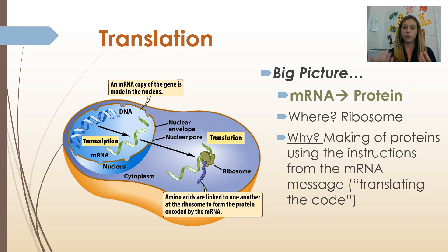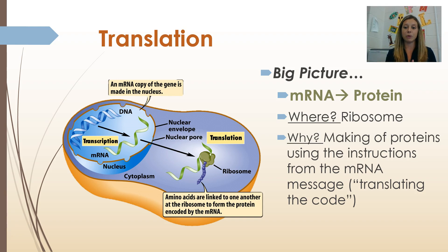Where is translation happening? Proteins are made at a ribosome in the cytoplasm. Why is this happening? It's happening because the making of proteins uses the instructions from the mRNA message. At the ribosome, the mRNA is translated and used to build a protein.